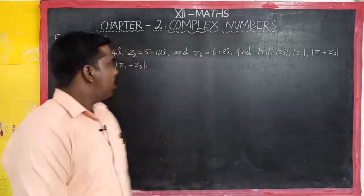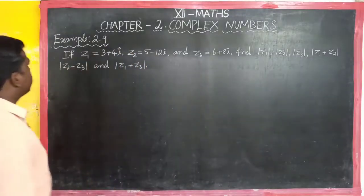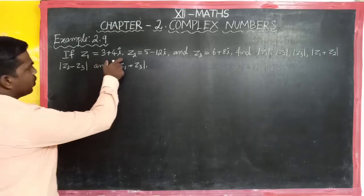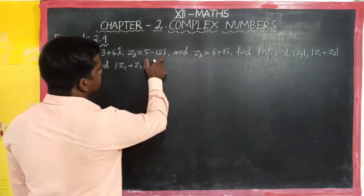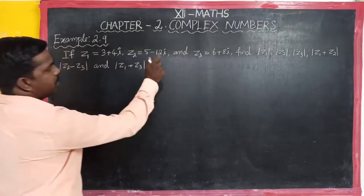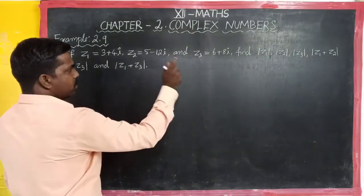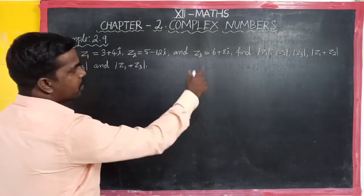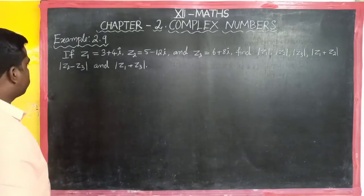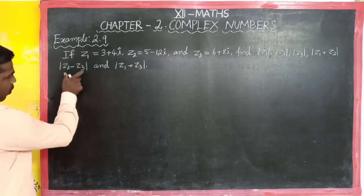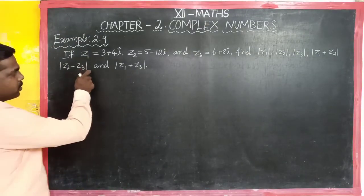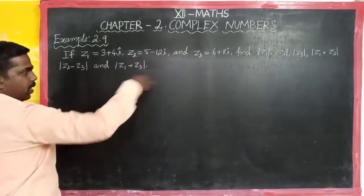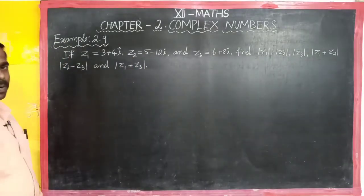Hi students. Example 2.9: if z1 is equal to 3 plus 4i, z2 is equal to 5 minus 2i, and z3 is equal to 6 plus 8i. Find modulus of z1, modulus of z2, modulus of z3, modulus of z1 plus z2, modulus of z2 minus z3, and modulus of z1 plus z3.